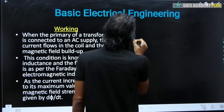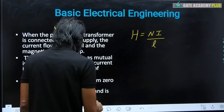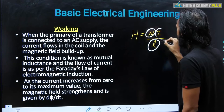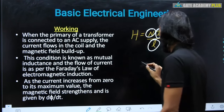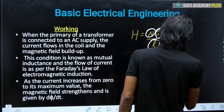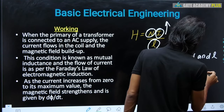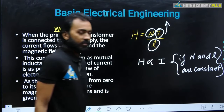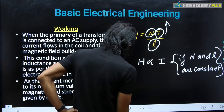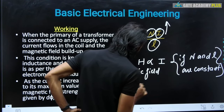We already know that H = Ni/L. So if the number of turns is fixed and the length of the conductor is fixed, then only the current is the thing that can directly control the value of H. In other words, H is directly proportional to the supply current when N and L are constant. H is the magnetic field intensity.